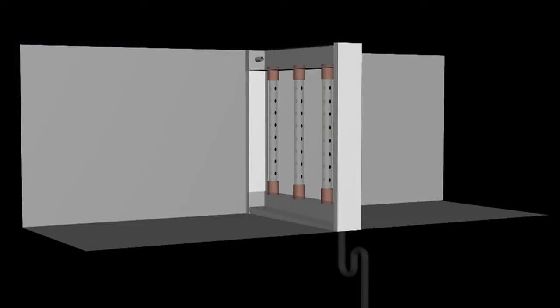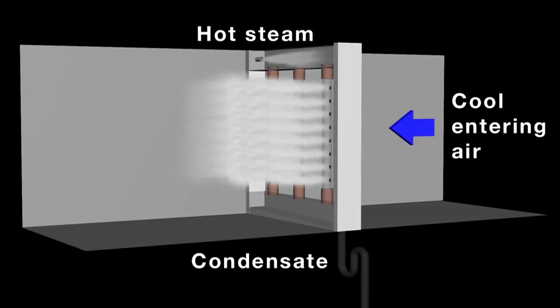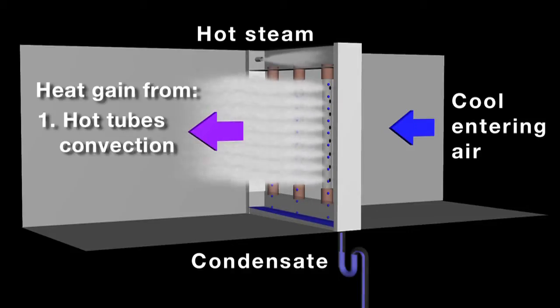In a duct or air handler, cool air flowing across hot dispersion tubes causes some steam inside the tubes to condense, thus maintaining the high temperature of the dispersion tubes. The convective heat transfer resulting from cool air flowing across hot dispersion tubes increases air temperature downstream of the dispersion tube assembly.